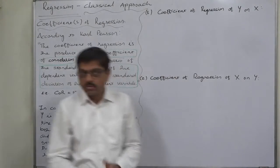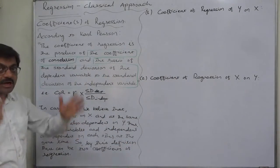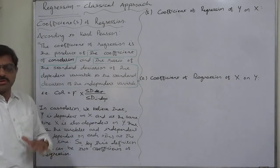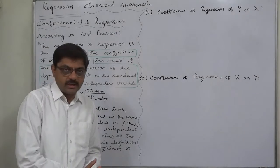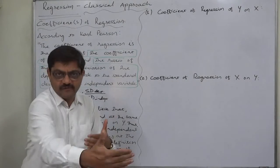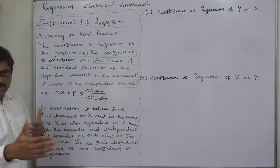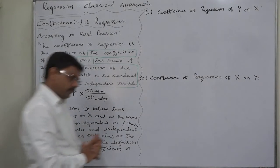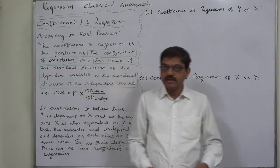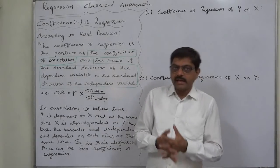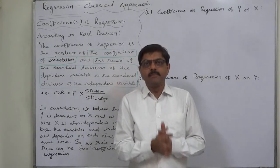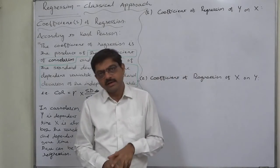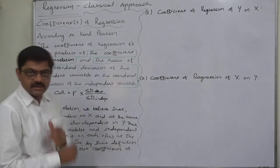Now, the concept of regression, particularly in statistics, is totally based on the concept of correlation. So the same belief is actually extended to the concept of regression. For regression also, we believe that X and Y are dependent on each other — that means at the same time both are independent as well as dependent on each other.